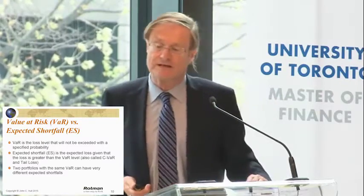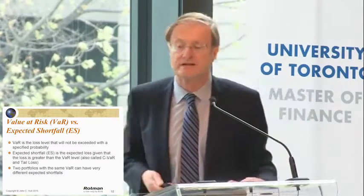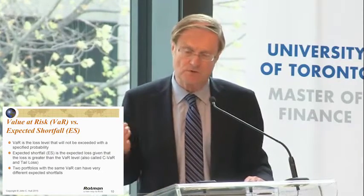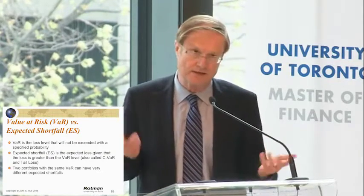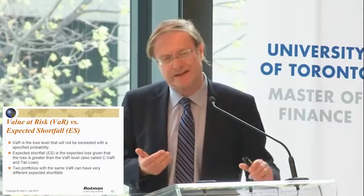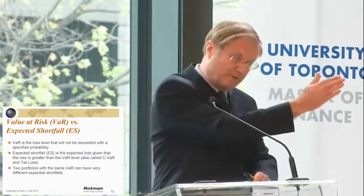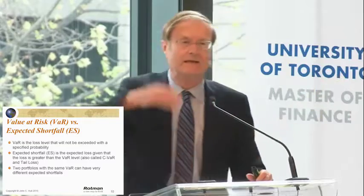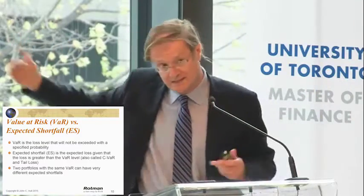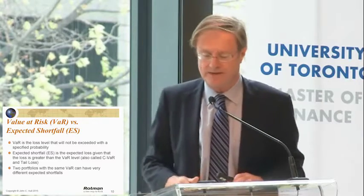Expected shortfall is the expected loss given that the loss is greater than the VAR level. It's also called CVaR and tail loss. Expressed crudely: if things do get bad, just how bad will it get? In other words, if we're in that tail of the distribution, what is our expected loss — just how bad might the loss be?